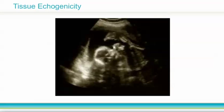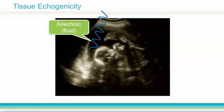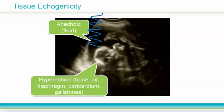When an ultrasound beam passes through a tissue without significant reflection, this area appears black, or anechoic, on the image. Simple fluid is anechoic, such as the amniotic fluid in this ultrasound image of a fetus. When a wave is almost entirely reflected back to the transducer due to a tissue interface with a large difference in acoustic impedance, the structure appears white or hyperechoic, such as the skull in this image. Diaphragm, pericardium, and gallstones would also appear hyperechoic. Soft tissues causing partial beam reflection appear hypoechoic, or various shades of gray.